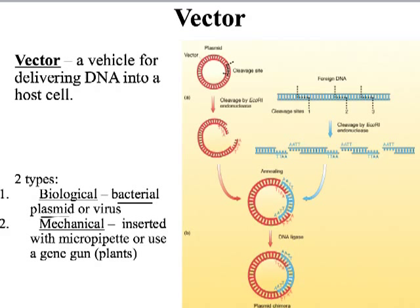There are different types of vectors. One type is biological — like a bacterial plasmid — or we can also use viruses to do this. The second type is mechanical. We can use a gene gun, which actually just pushes genes into a cell. Or we can insert DNA with a micropipet, which is just a tiny, tiny pipet.